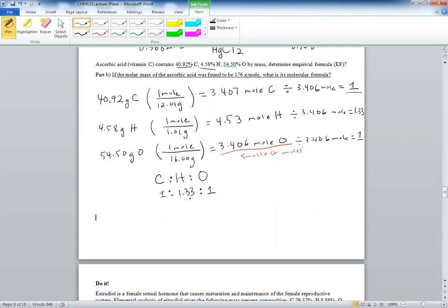So anytime you have a decimal, you have to find the multiple to make it a whole number. So if we have 1.33, this translates into 1 and one-third, which is 4 over 3. This is a mixed fraction, this is an improper fraction. 3 times 1 plus 1 is 4. So how do we get rid of the 3 is we multiply by 3.